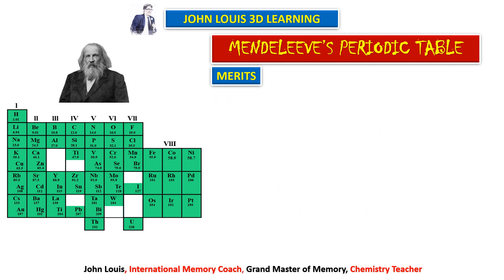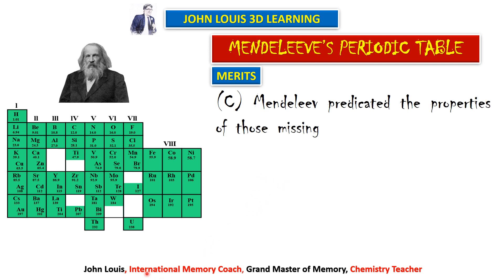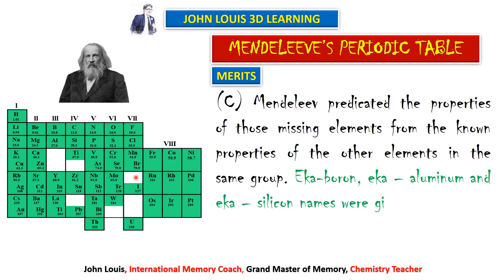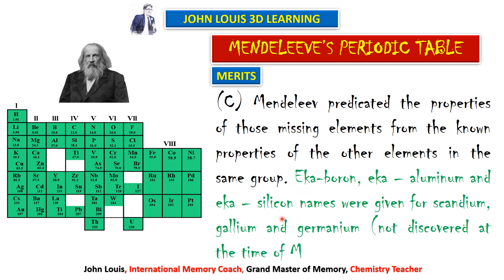The third merit: Mendeleev predicted the properties of missing elements from the known properties of other elements in the same group. Wherever he left vacant spaces, those are called Eka Boron, Eka Aluminium and Eka Silicon. These were later discovered as Scandium, Gallium and Germanium respectively. All the vacant places were filled with new elements and his prediction was perfectly correct.